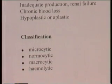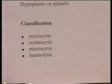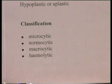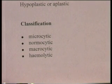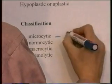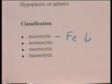Haematologists usually classify anemias by what they see under the microscope. If they see small red blood cells — microcytic anemia — this is usually due to iron deficiency. So microcytic anemia is caused by not enough iron, resulting in a microcytic anemia.